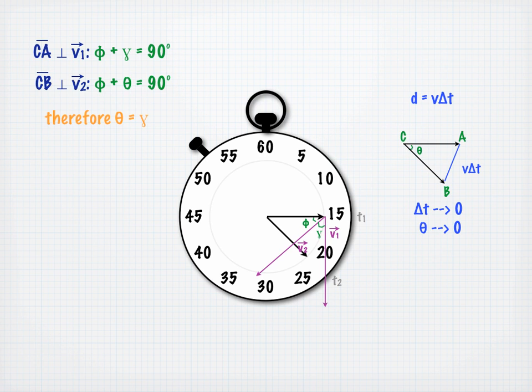So we will now treat triangle ABC as an isosceles triangle with V delta t as the base.